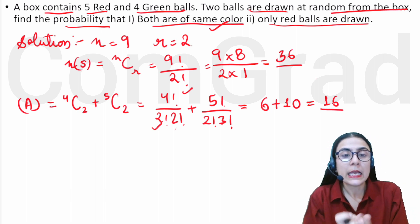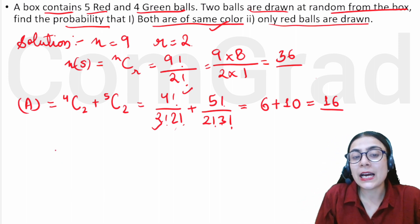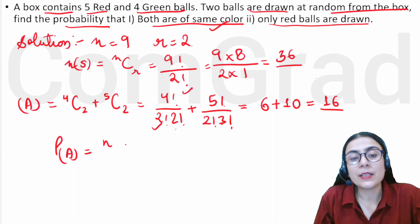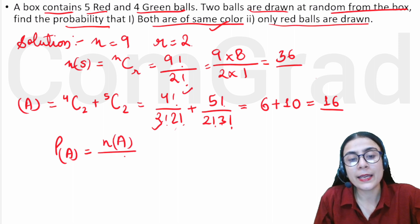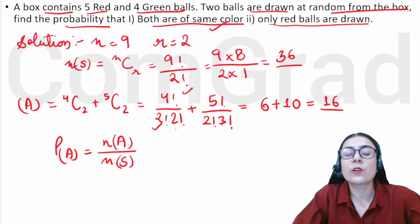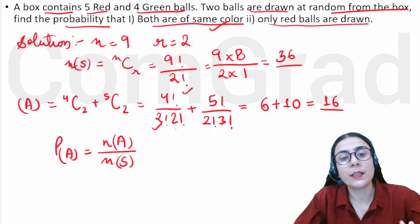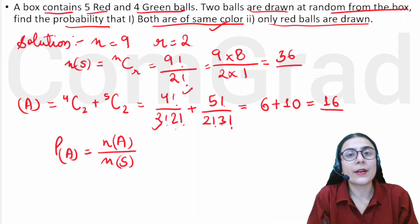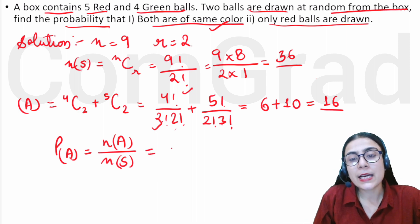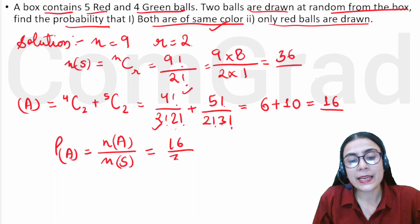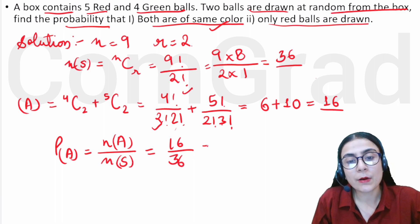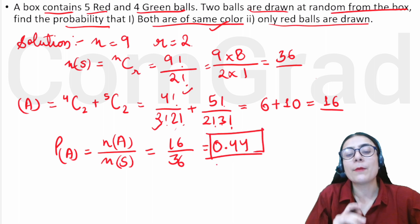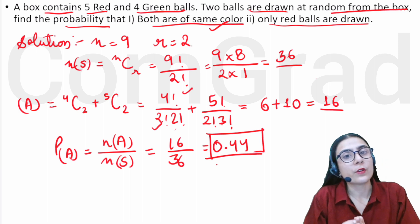Now we put the probability formula for event A: P(A) = number of events / number of sample space = 16 / 36 = 0.44. So the first case probability is 0.44.